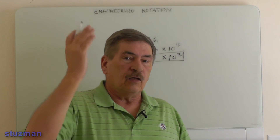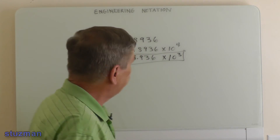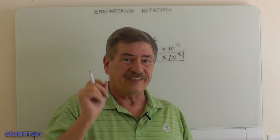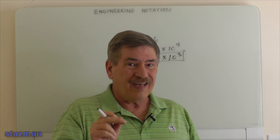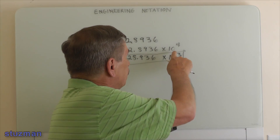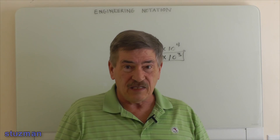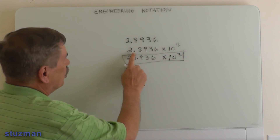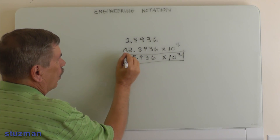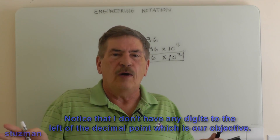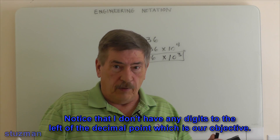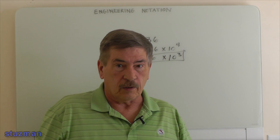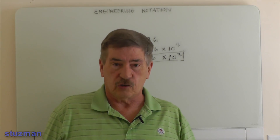You might think — what about going to 10 to the sixth? That would be moving up two digits from 10 to the fourth to 10 to the sixth, so I'd need to move the decimal two places to the left, making the number smaller. But that would give me a leading zero to the left of the decimal point, which is not allowed — it must be one, two, or three digits with no leading zeros. So going to 10 to the sixth won't work. In this case, 10 to the third is our only valid option.